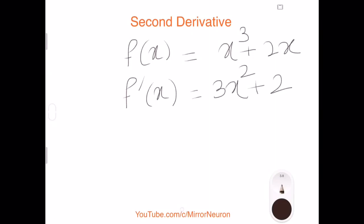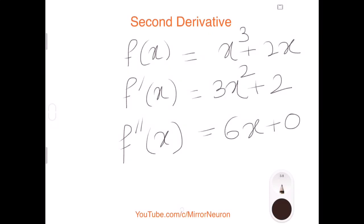So my first derivative will be 3 times x square plus 2. That is my first derivative. And my second derivative is nothing but I am taking the derivative of the first derivative. So that means it becomes 6 times x plus 0.